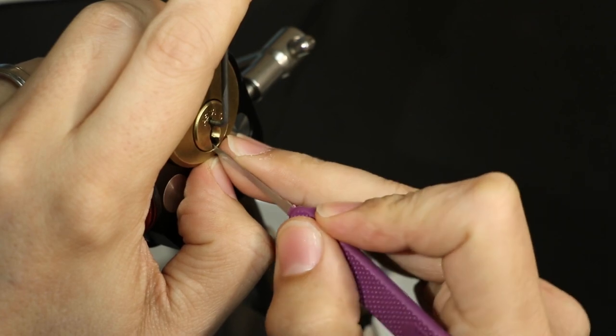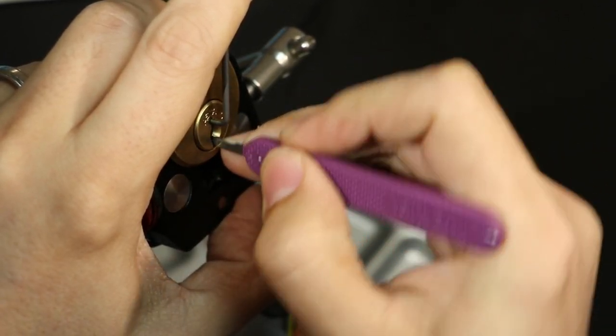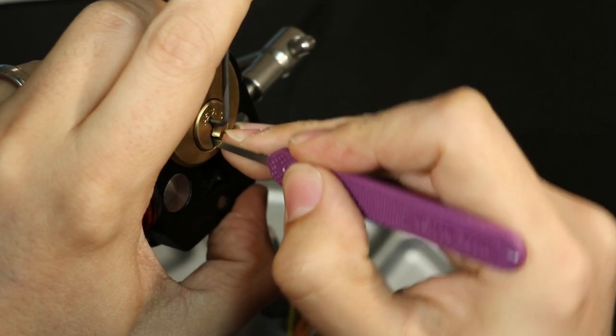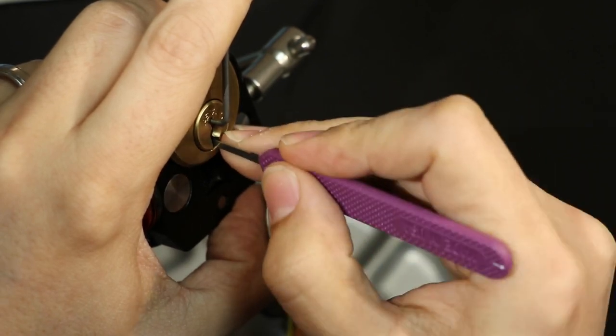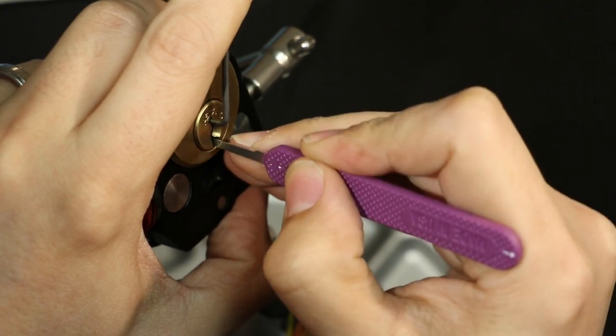Once you get the false set, you can start working on the side pins. There's not too much to say here to get your false set. You're just feeling for the binding pin, and when you feel a binding pin, you push on it.